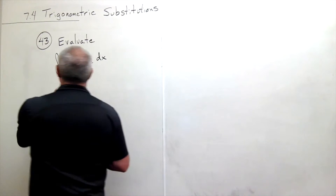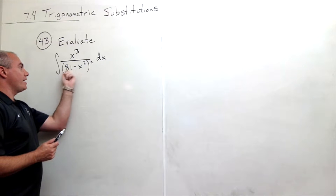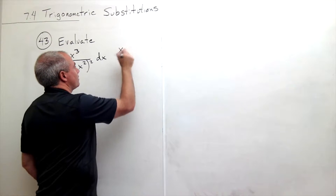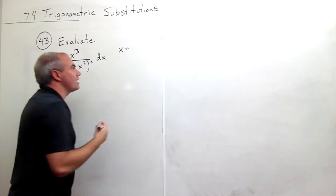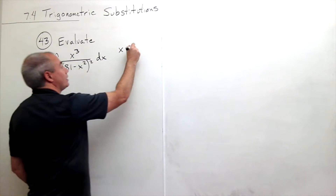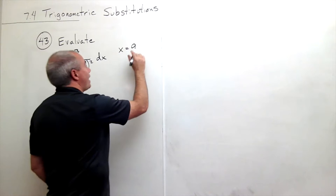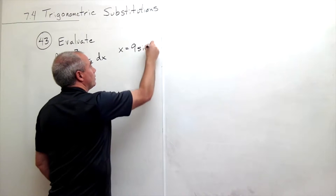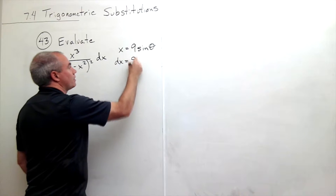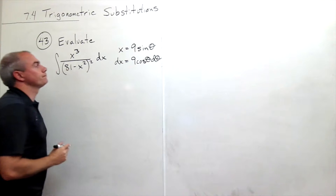Here we have the form a squared minus x squared. The type of trigonometric substitution that gives us is that x should be a sine theta. A in this case is 9 because 81 is a squared. So we get x equals 9 sine theta. And now we can figure out dx: dx is 9 cosine theta d theta.